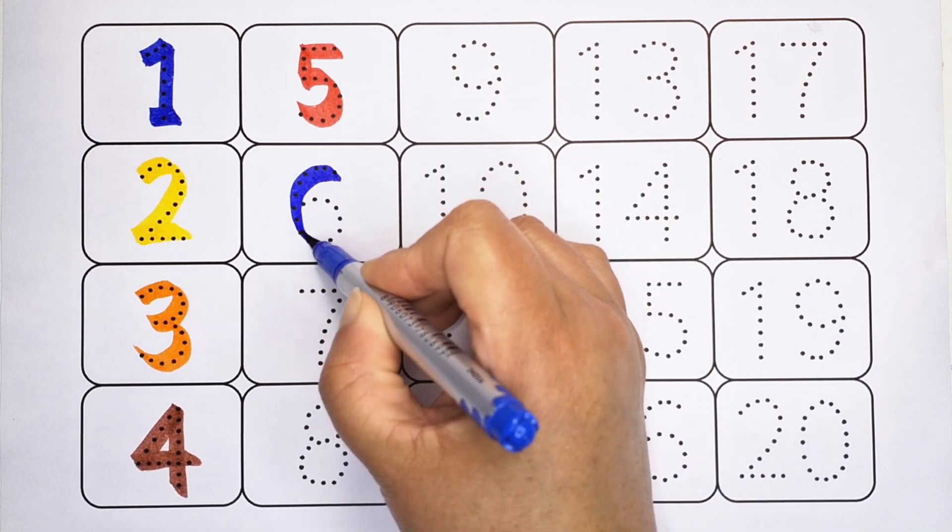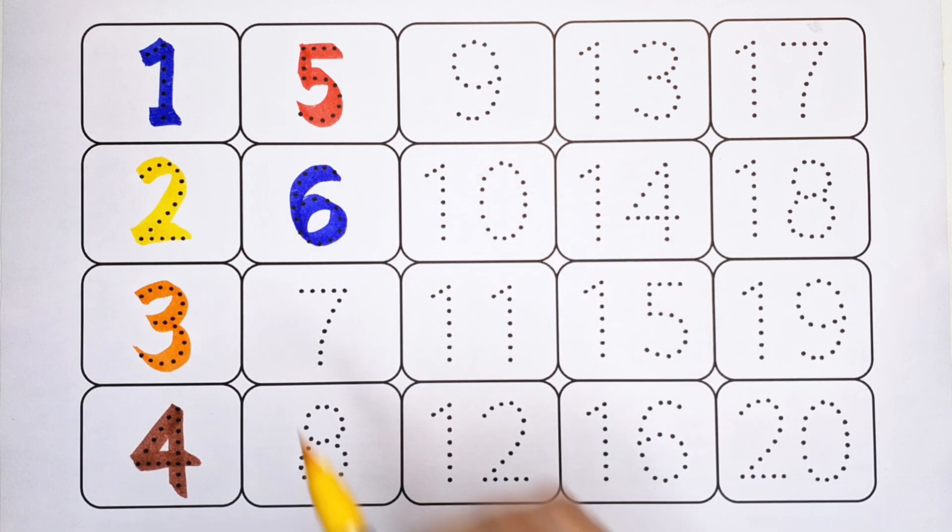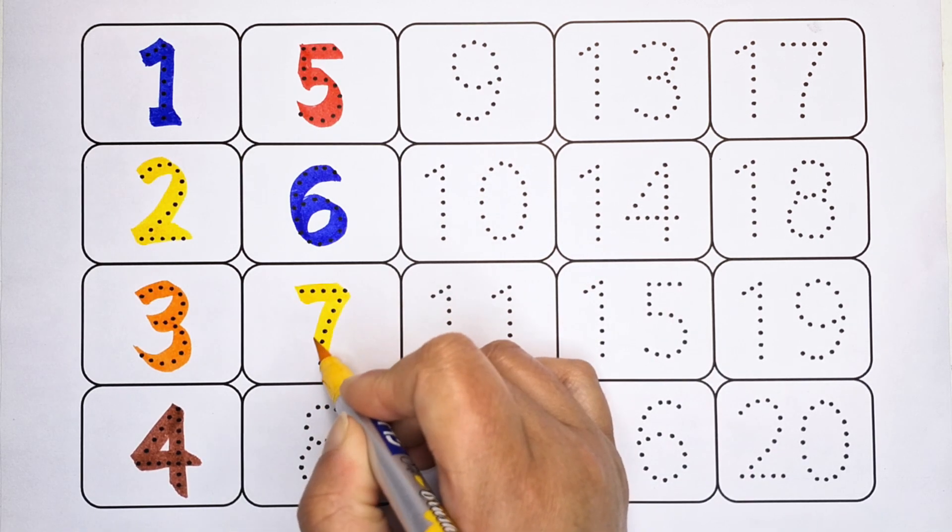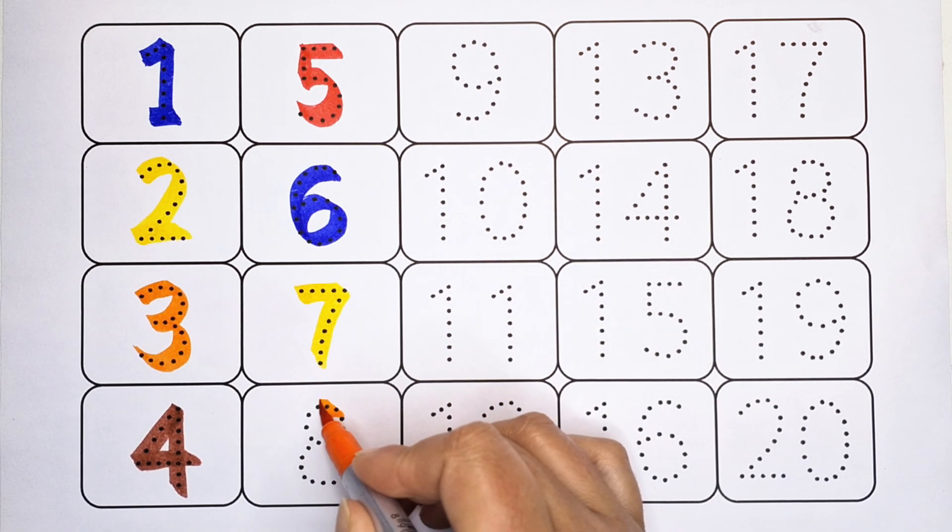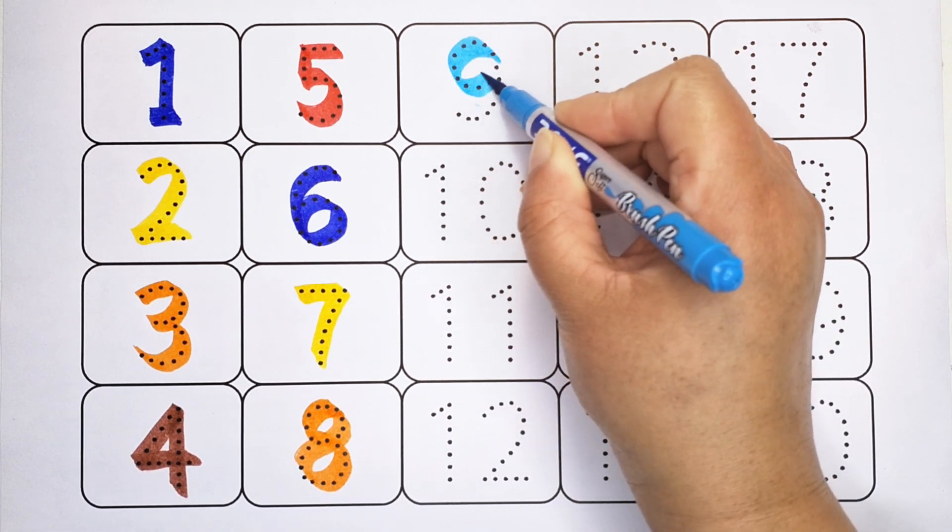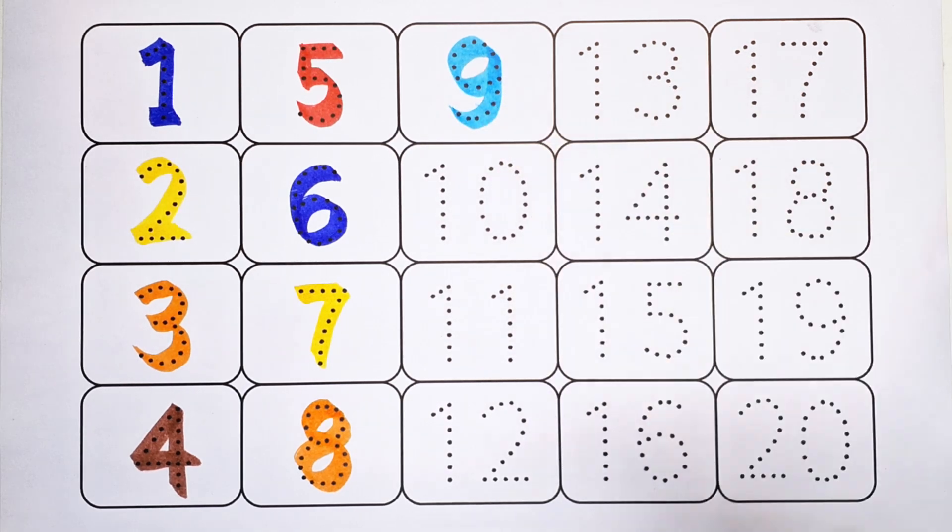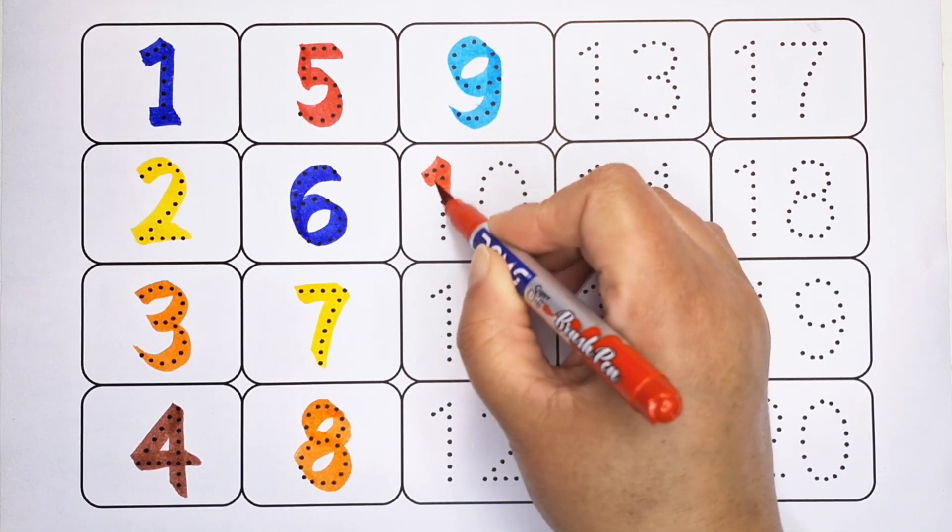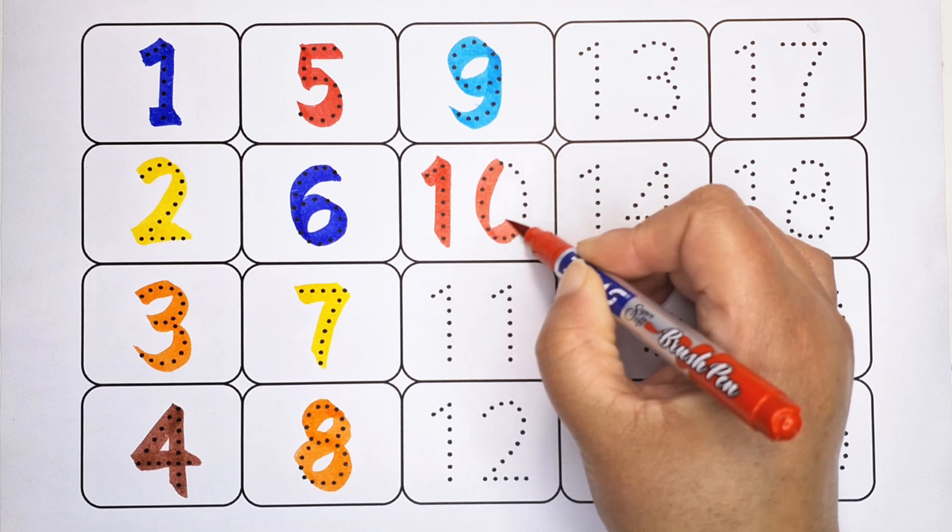Six, number six. Seven, number seven. Eight, number eight. Nine, number nine. One, zero, number ten.